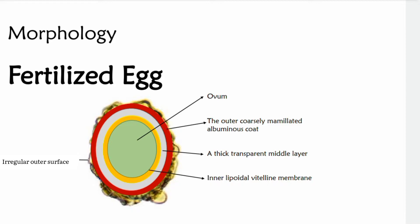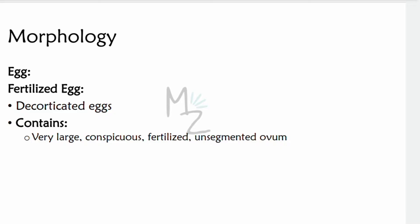As you can see in this picture, it has the outer coarsely mammillated albuminous coat, a thick transparent middle layer, and the inner lipoidal vitelline membrane — the yellow one. Some eggs are found in feces without that mammillated albuminous coat; these eggs are termed decorticated eggs.